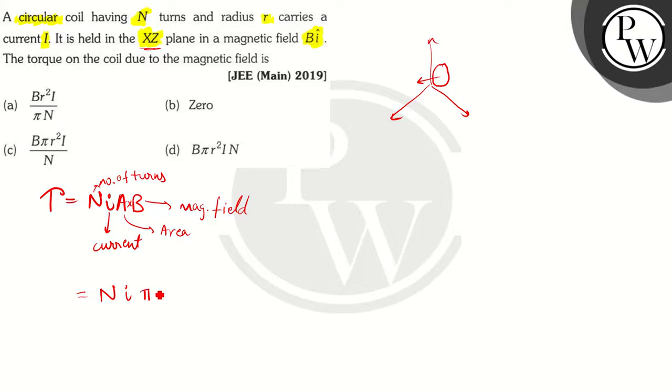Since the radius is R we can write the area as pi R square for a circular coil, and the direction will be J cap, cross product with B. So B in this case is B I cap.